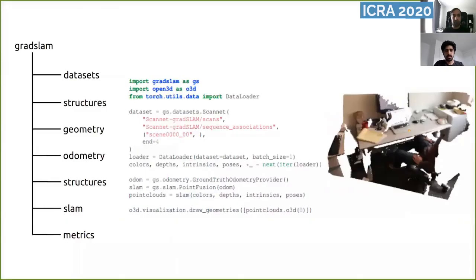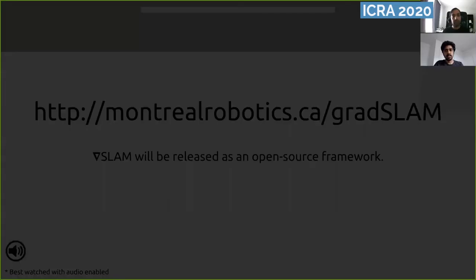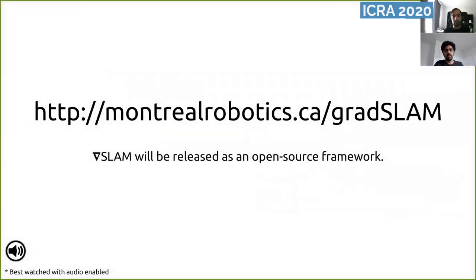We intend to make our code available in the form of a modular differentiable SLAM library. The code snippet shown illustrates the structure of the package and how easy it is to run Grad SLAM from popular datasets such as ScanNet. Thank you for watching this video. Please visit our project page at montrealrobotics.ca.